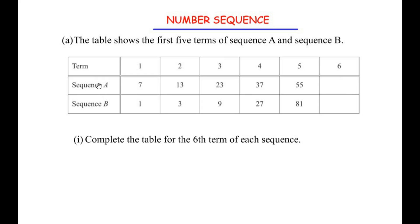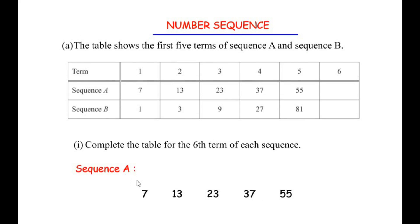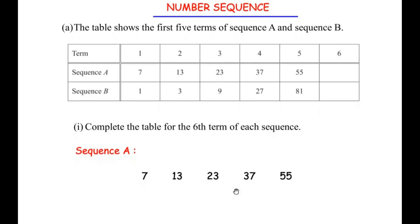We can see that there are two sequences given with the first five terms. Let me consider sequence A first. The first five terms of sequence A are 7, 13, 23, 37, and 55. Let us find the common difference between each term: the second term minus the first term is 13 minus 7, which gives us 6. Then 23 minus 13 gives us 10.